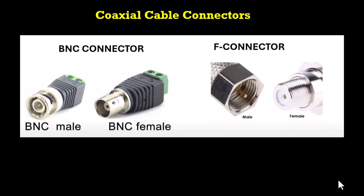There are two types of connectors used for the coaxial cable: the BNC connector and the F connector. Both have male and female versions. The BNC connector is usually used in professional video equipment and some radio frequency applications, while the F connector is used to conduct electric signals to TV sets.